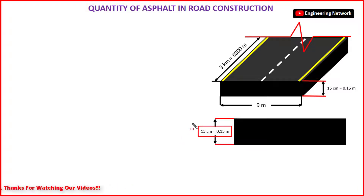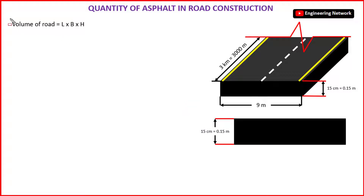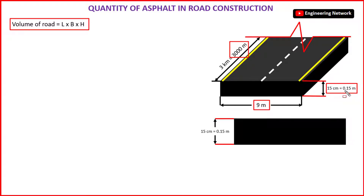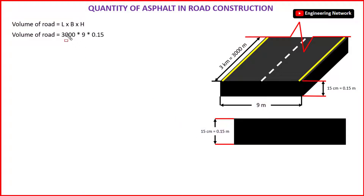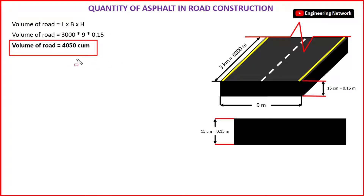Now to calculate the quantity of asphalt in this road, first I have to calculate the volume of this road. So the volume of this road is equal to length × width × height. The length of this road is 3000 m, the width is 9 m, and the height or thickness of the asphalt layer is 0.15 m. So the volume of this road is equal to 3000 × 9 × 0.15, which equals 4050 m³.